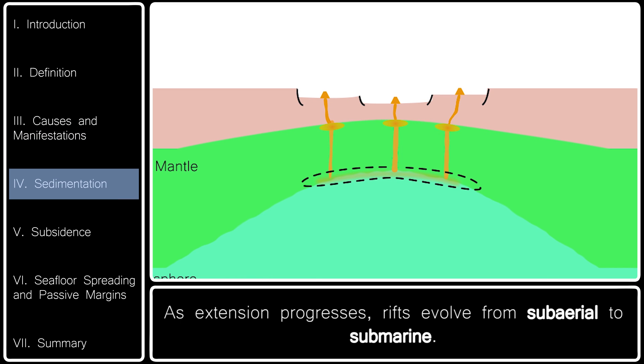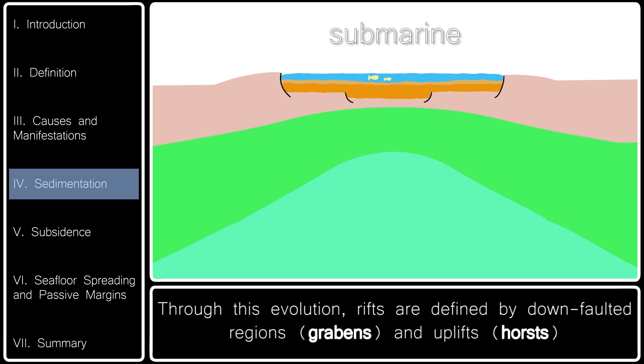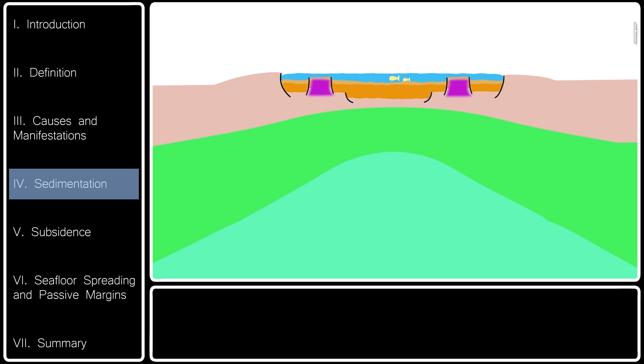As extension progresses, rifts evolve from sub-aerial to submarine. Through this evolution, rifts are defined by down-faulted regions, grabens, and uplifts bounded by rift-flank highs.